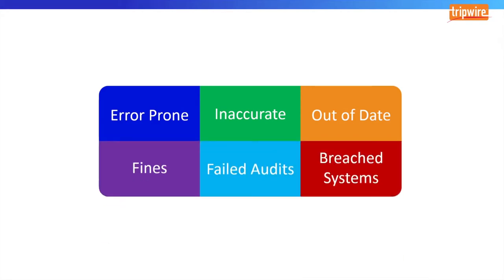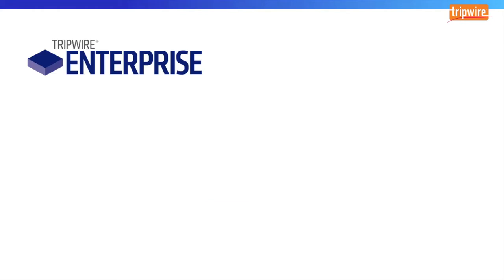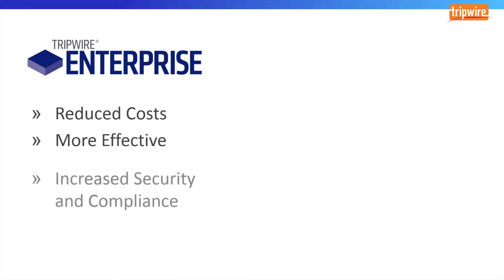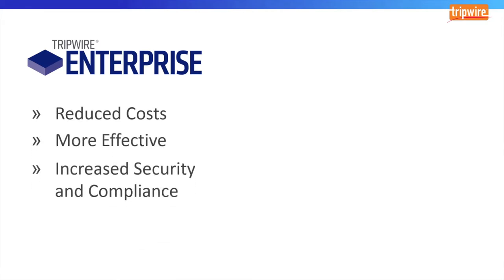We know this because news of high fines, failed audits, and breached systems is common, and as companies move systems into the cloud, the challenge becomes even more difficult. Today, I'm going to show you how Tripwire Enterprise helps automate the compliance process, not only reducing your time and effort, but making it effective so that you're continuously compliant and secure, regardless if your systems are on-premise or in the cloud.